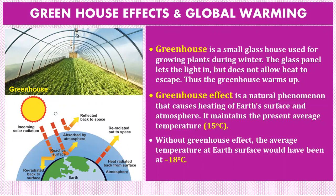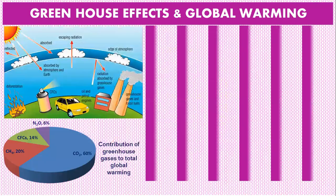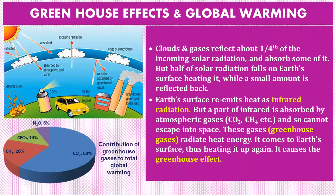The greenhouse effect maintains the present average temperature of about 15 degrees centigrade. Without the greenhouse effect, the average temperature at Earth's surface would be minus 18 degrees centigrade. Clouds and gases reflect about one fourth of incoming solar radiation and absorb some of it, while half of the solar radiation falls on Earth's surface, heating it.